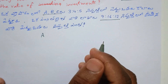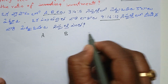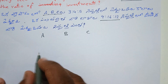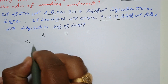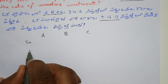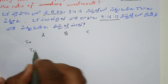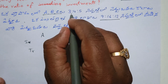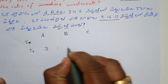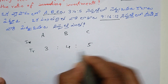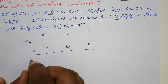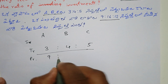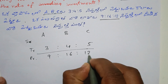Let's get started. So, first A, B, C. Here we have investment in the capital period. Here we have time period and time ratio. Time ratio is 3 is to 4 is to 5. Here we have the profit ratio: 9 is to 16 is to 12.